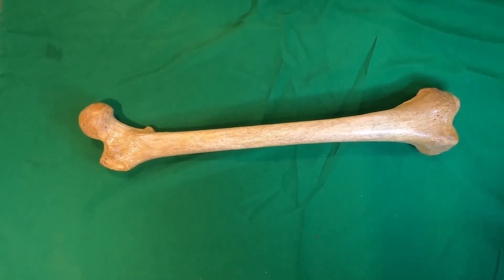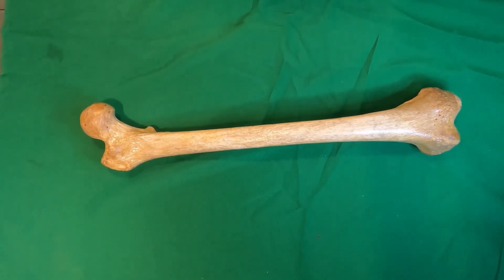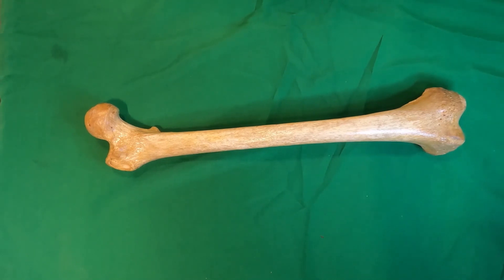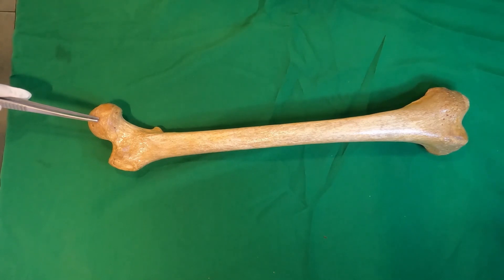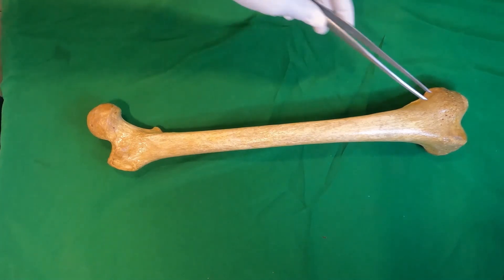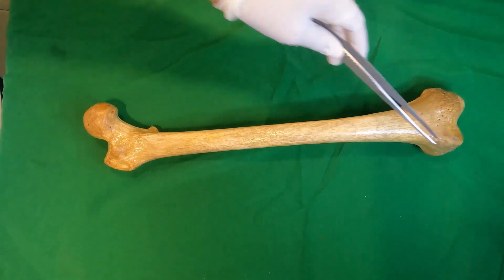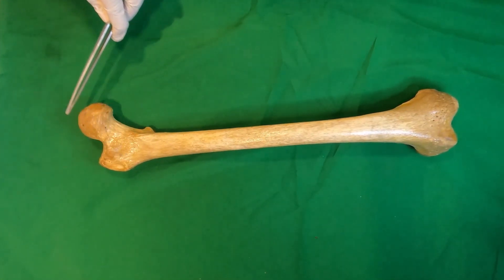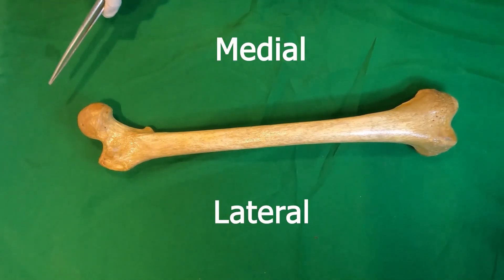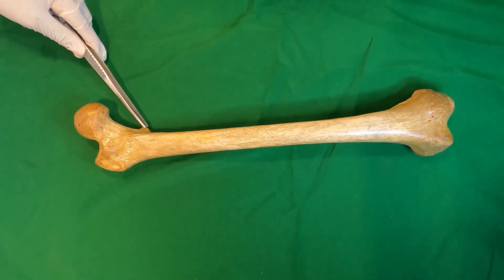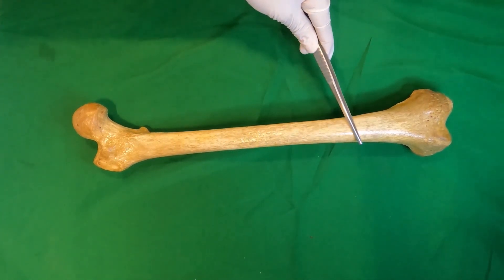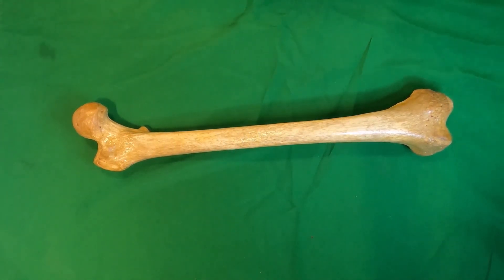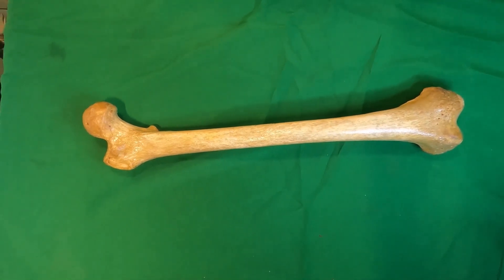Site Determination. To determine the side of the bone, we must consider the following features. First, the upper end bears a rounded head, whereas the lower end is widely expanded to form two large condyles. Second, the femoral head is directed medially. Third, the lesser trochanter is posterior and the cylindrical shaft is convex forwards. Thus, we can decide whether this is the left or the right femur. In this case, it is the right femur.